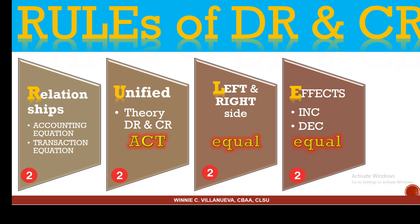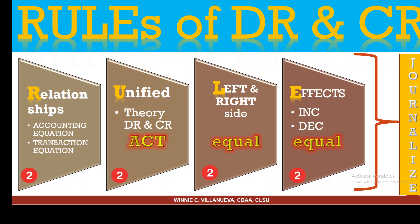Does it increase or does it decrease? There are around nine combinations for the increase and decrease that need to be put on your left and right side — the left side is debit and the right side is credit. So left is debit and right is credit. When we facilitate the rule, we can now journalize.